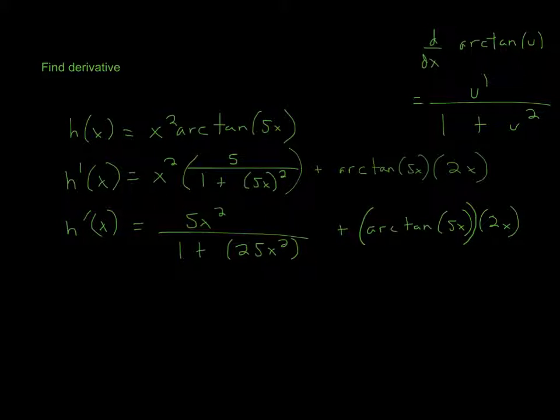Anything inside the parentheses is u. When you take the derivative of this function, that's u prime, which just means derivative. It's u prime, the derivative of whatever is inside the parentheses, over 1 plus u squared - whatever is inside the parentheses, squared.